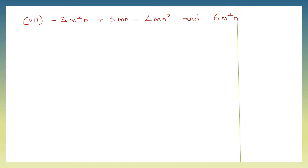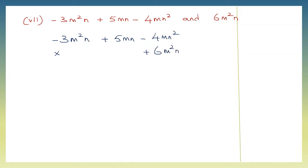Moving on to the next question — question 7. Here we have minus 3m squared n plus 5mn minus 4mn squared, and we need to multiply the trinomial with 6m squared n. So let's write: minus 3m squared n plus 5mn minus 4mn squared into 6m squared n.